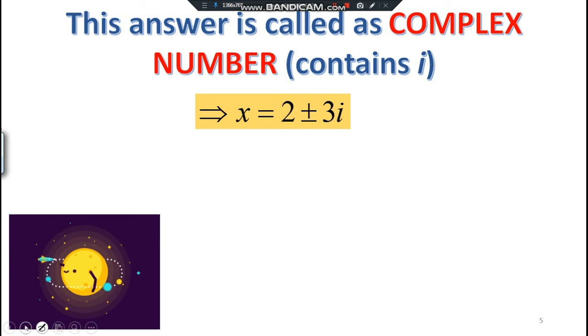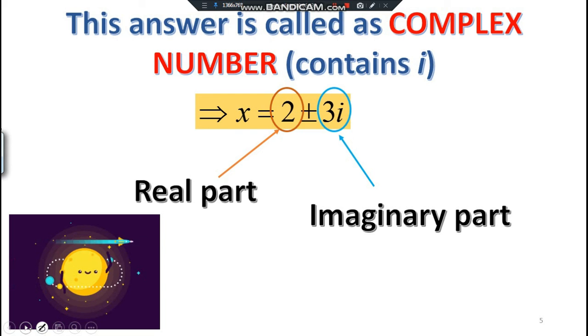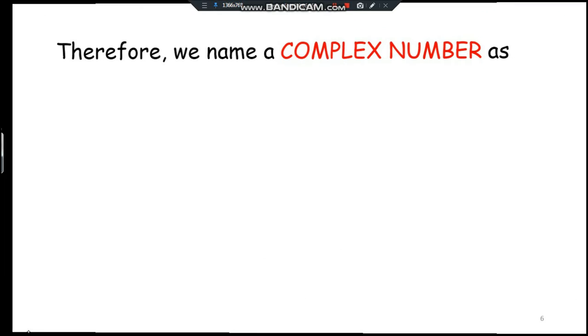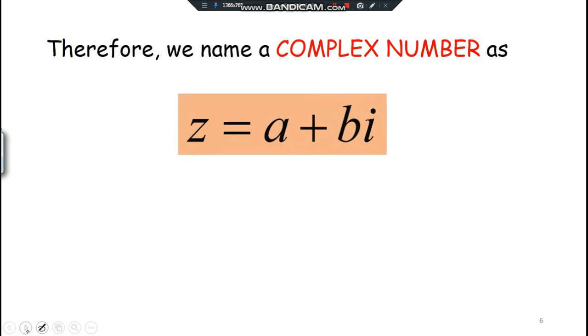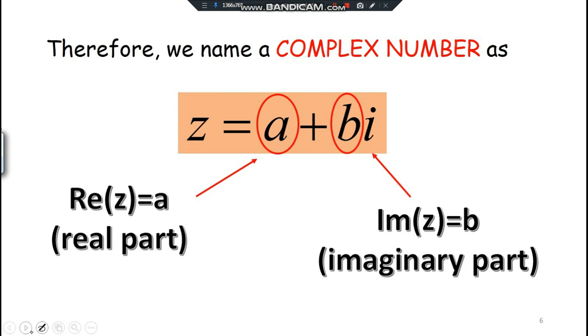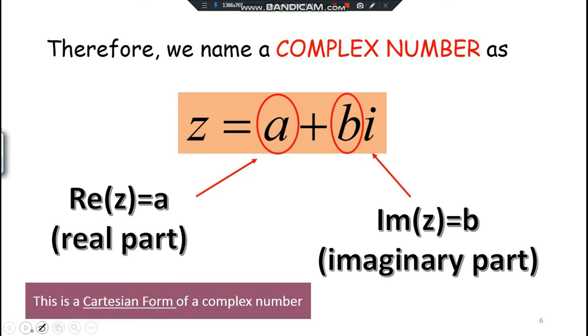Therefore, we name a complex number as z = a + bi. Generally, this is the general form. a is the real part and b is the imaginary part. Please be aware that this is actually a Cartesian form of a complex number, because we have another form for complex numbers.